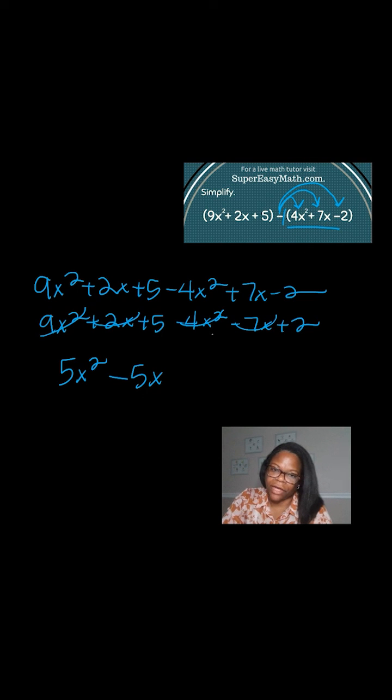Then I have a plus 5 and a plus 2 and that's a plus 7. So when I simplify all of these terms, this is what I'm left with: 5x squared minus 5x plus 7.